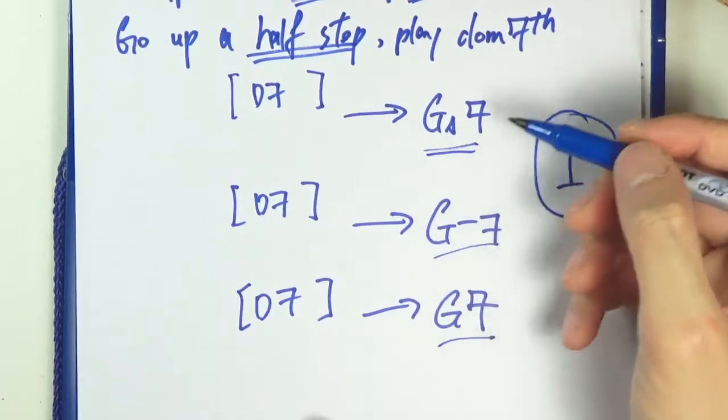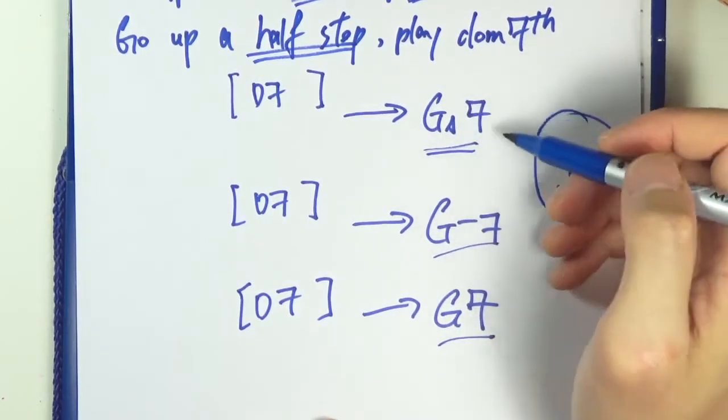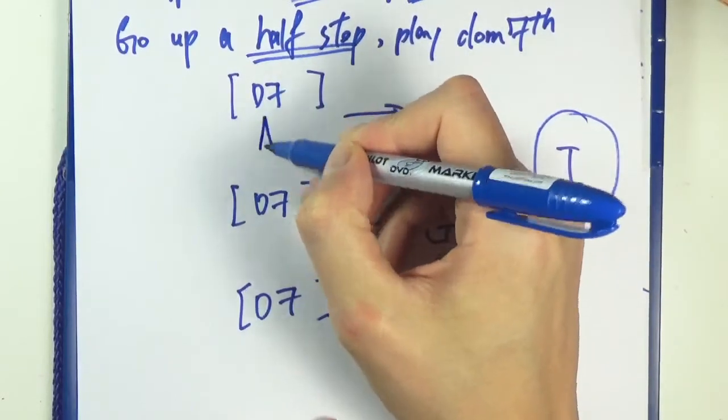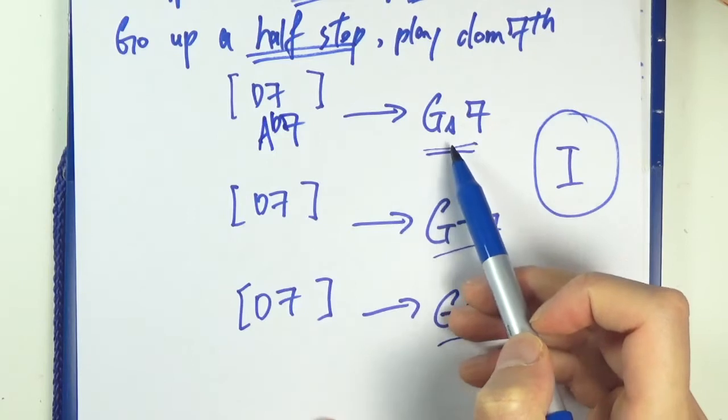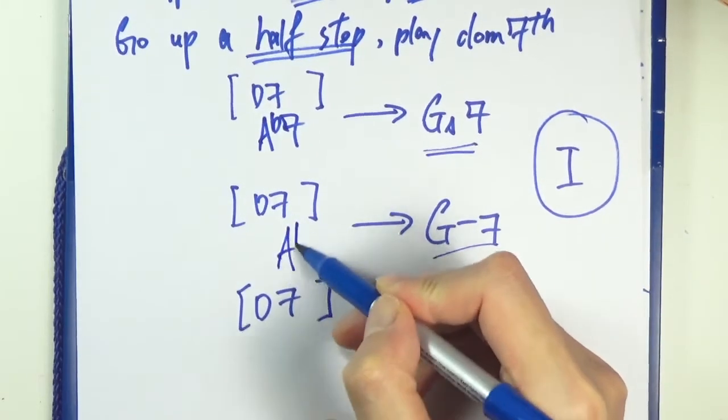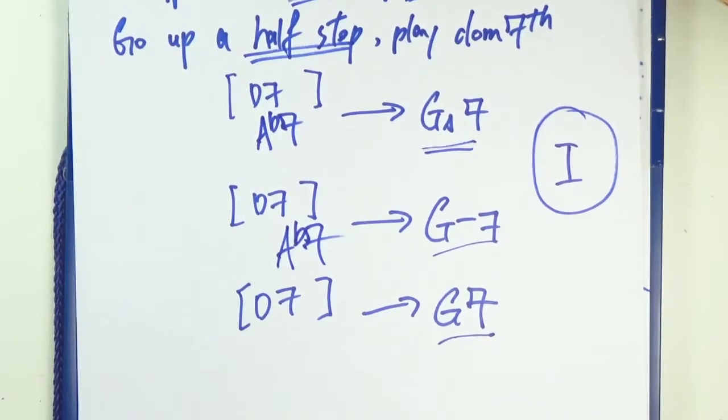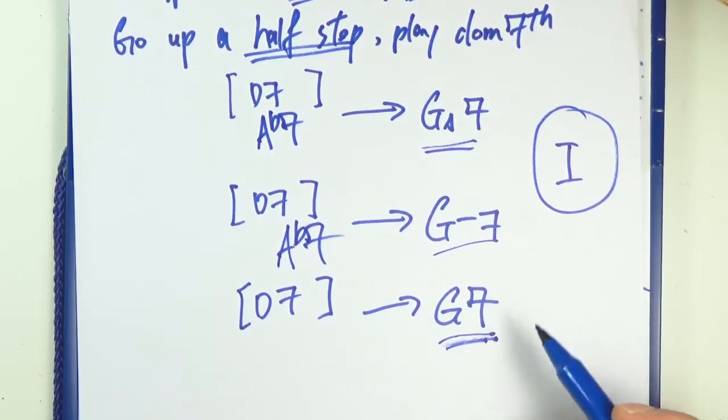If you want to play the flat five sound, G major seven, you can just go up half a step, so A flat seven. It's super handy. G minor, same thing here. Dominant seven chord, it would still work here, so go up half a step and play dominant seven chord.